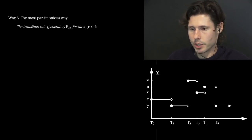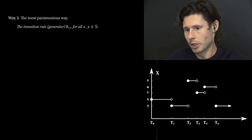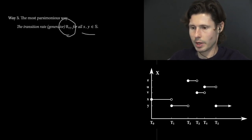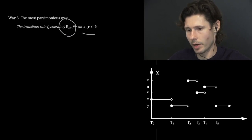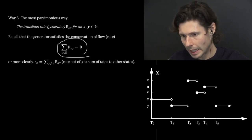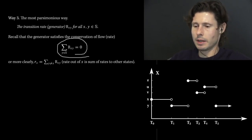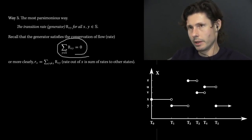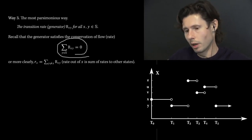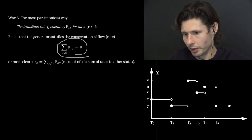Way 3 is the most parsimonious way, and this goes through the generator, sometimes called the transition rate matrix. For every pair of states x and y, you have these numbers, interpreted as transition rates in an instantaneous amount of time. Keep in mind this conservation identity: if you think of R as a matrix and sum up an individual row — that is, going over row x across all columns — you're going to get 0.